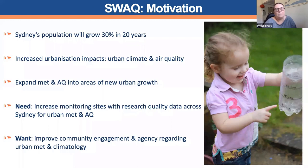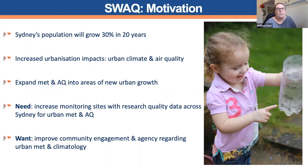And then for air quality, cities tend to have poorer air quality than rural surrounds as well, and that can vary spatially depending on emissions and weather conditions. We were wanting to expand observations of meteorology and air quality in areas of new urban growth. In Sydney, this is concentrating on the southwest and northwest of the city where there is really rapid growth being undertaken, so we wanted more observations in that area for our research.